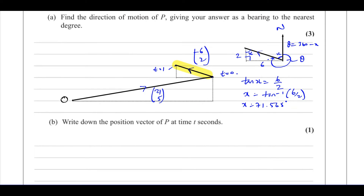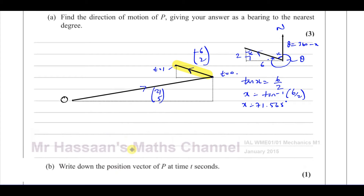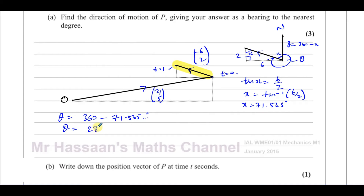Now we want the angle as a bearing. Therefore, theta equals 360 minus 71.565, which gives 288.434 degrees. They want the answer to the nearest degree, so the bearing is 288 degrees. That's the answer to part A of this question.